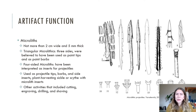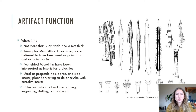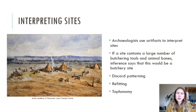Microliths and microblades can take on a number of forms, but overall they've been considered to be used as inserts for projectile weaponry. While this is often the case, there is also evidence from microwear analysis to suggest that these microliths were also used for activities such as cutting, engraving, drilling, and shaving. When interpreting sites using lithics, it is incredibly important to consider assemblages as a whole rather than individual artifacts.